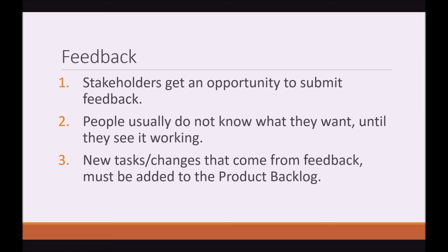Feedback. Stakeholders get an opportunity to submit feedback. People usually do not know what they want until they see it working. New tasks or changes that come from feedback must be added to the Product Backlog. When people see the working product, they often say, 'I didn't envision it working this way — maybe I explained it wrong, we actually need it working in this specific way.' Any feedback that results in new tasks needs to go straight into the Product Backlog to be reprioritized, so you don't just keep getting work piled on top of you. Remember, we're doing this as Agile and we want to be able to prioritize the most important tasks.